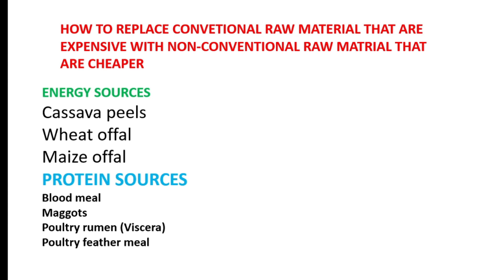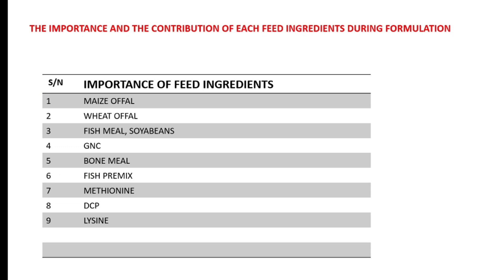The next thing we are going to look at is the importance and contribution of each feed ingredient during formulation. I'm going to talk about both conventional and non-conventional ingredients. Maize offal is a by-product of maize — it is a carbohydrate source that provides energy to the fish. Wheat offal is also an effluent of wheat; it is a carbohydrate source chiefly used because of its crude fiber content, which helps in digestion.